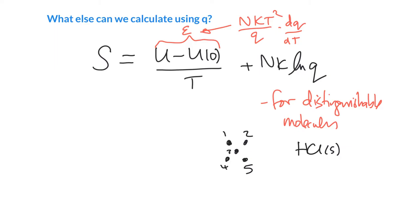However, the other situation is indistinguishable molecules. For instance, if you had HCl in the gas phase, then if you had molecules here and here, they're constantly moving around. So if you looked a second or two later, you really couldn't tell where the things were.